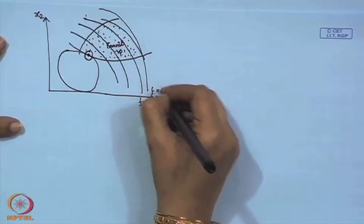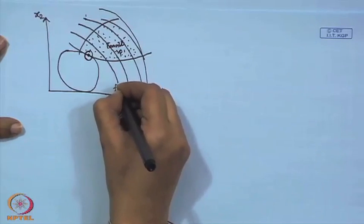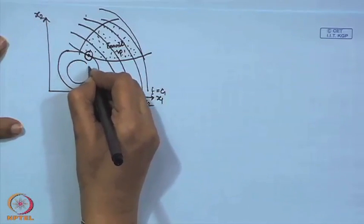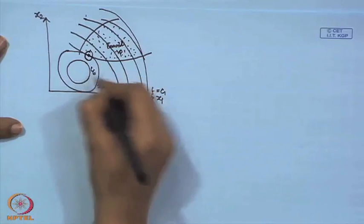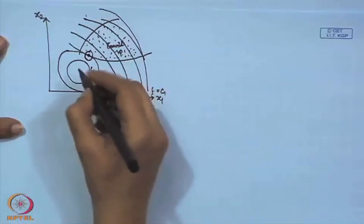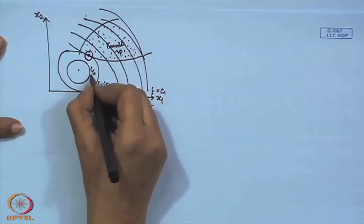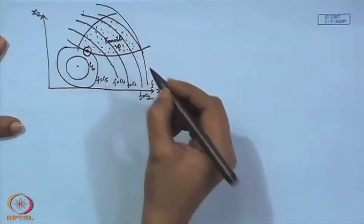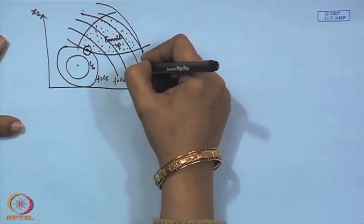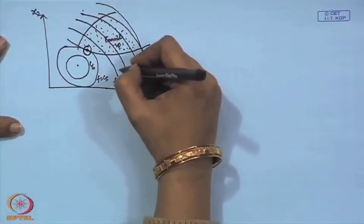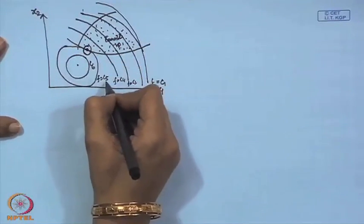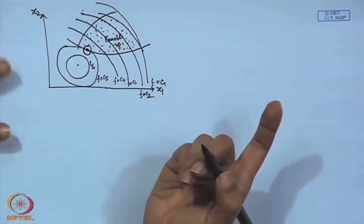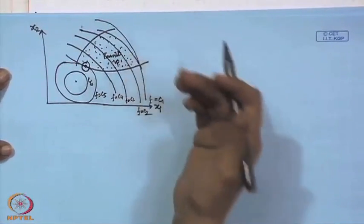If the function moves to c₆, that will be outside the feasible space, so we stop the iterative process. Starting from f = c₁, it moves to c₂, c₃, getting better and better functional values, reaching c₅ — the corresponding optimal point. The searching mechanism moves from x₁ to x₂, x₃, x₄, and finally x₅, which is the optimal point for the given problem.